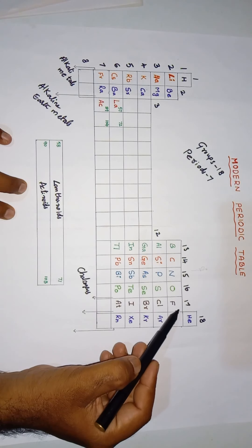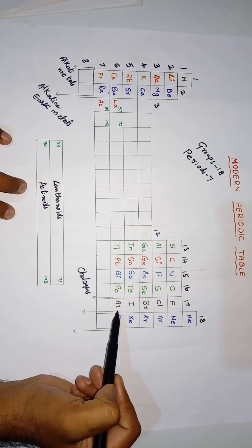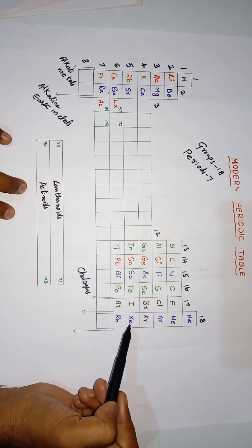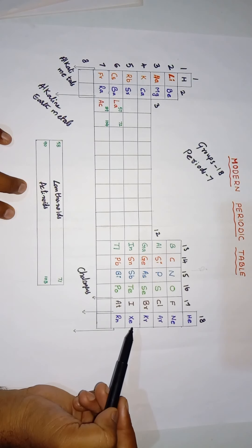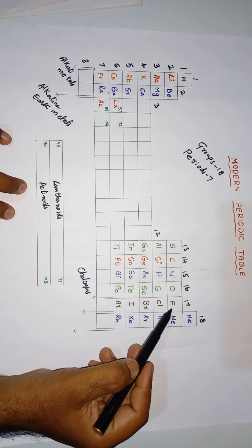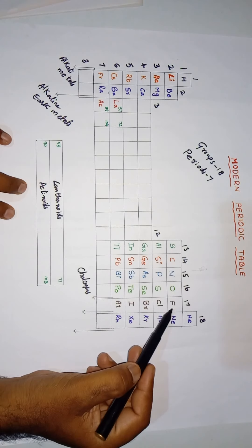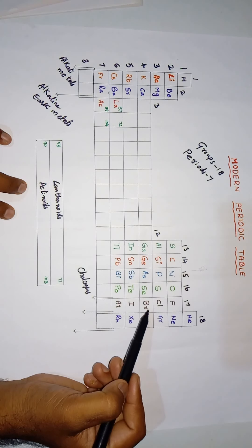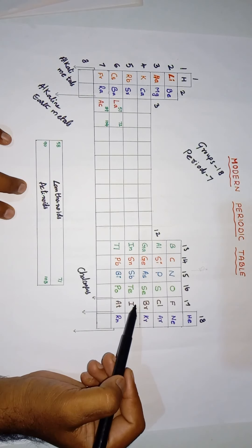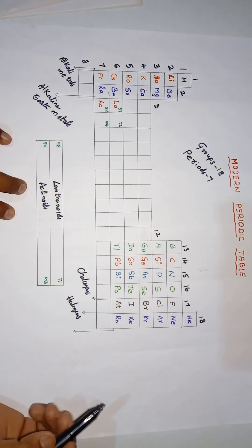Group 17 elements — fluorine, chlorine, bromine, iodine, and astatine — are called halogens. Due to their great reactivity, free halogen elements are not found in nature; they occur only in combined form. Fluorine is the most abundant of the halogens. They are called halogens because most of them are produced from sea salts.